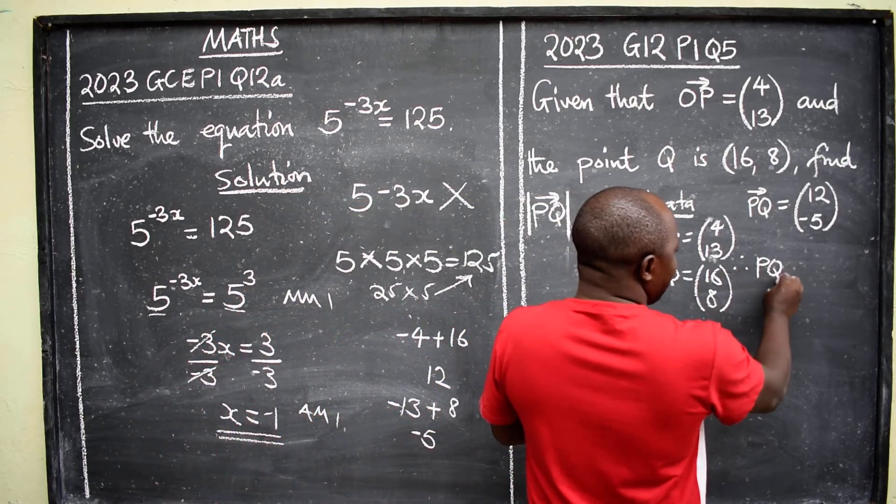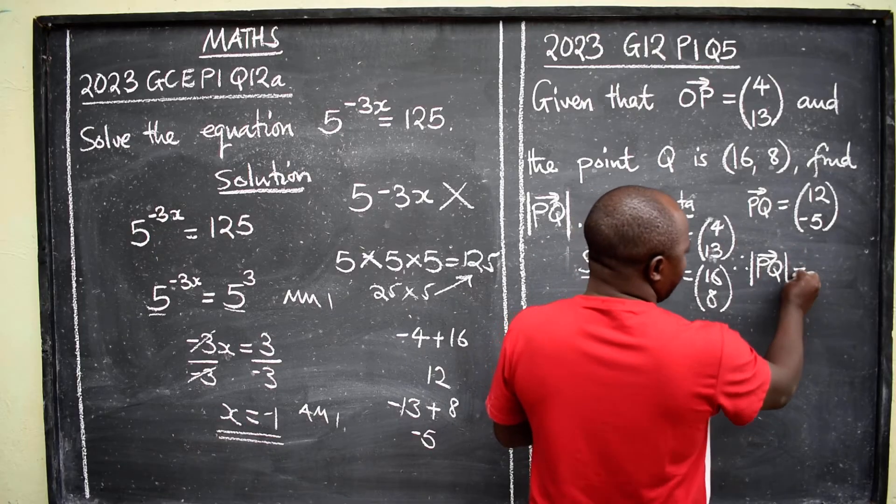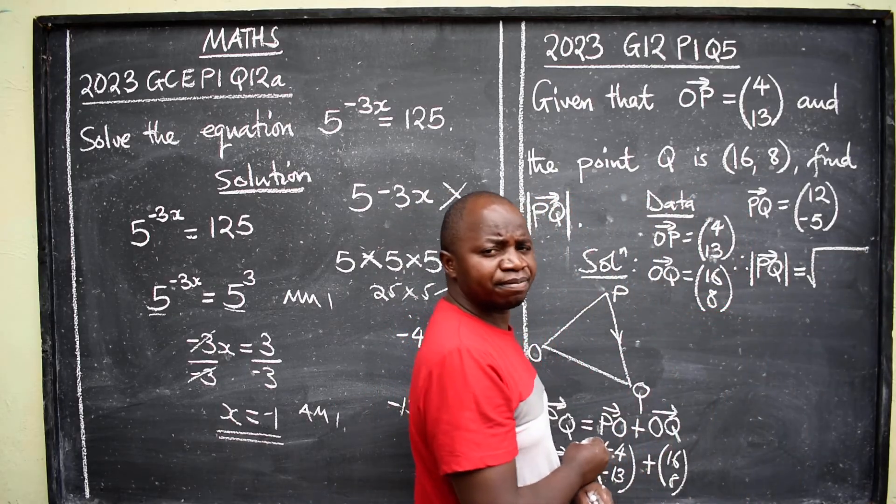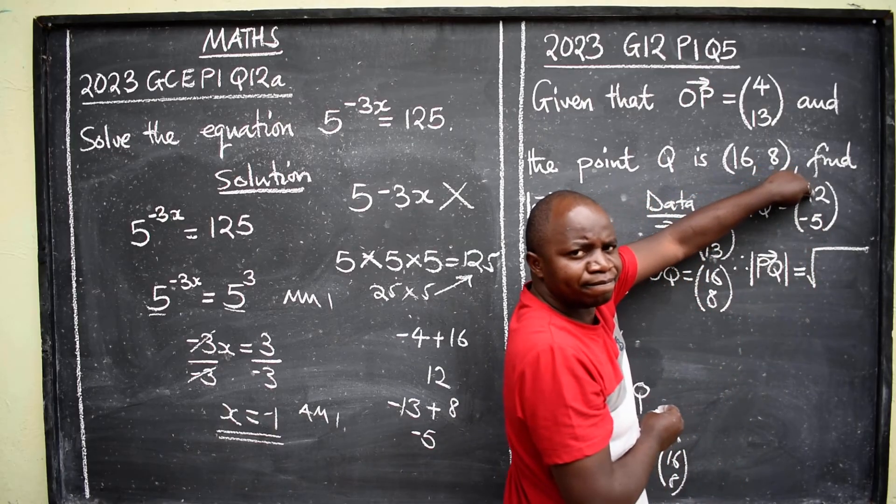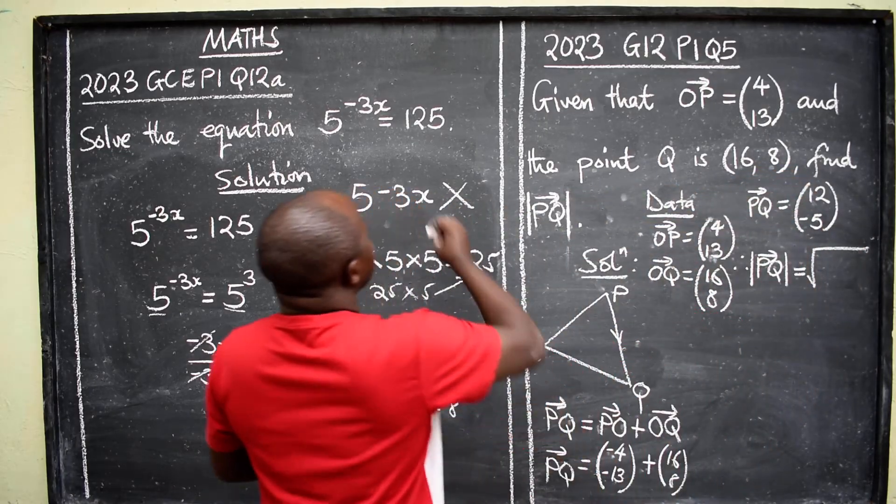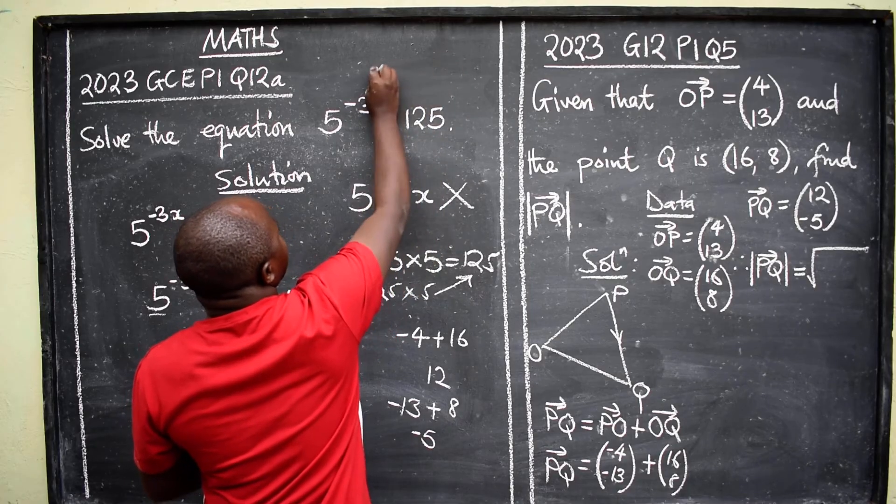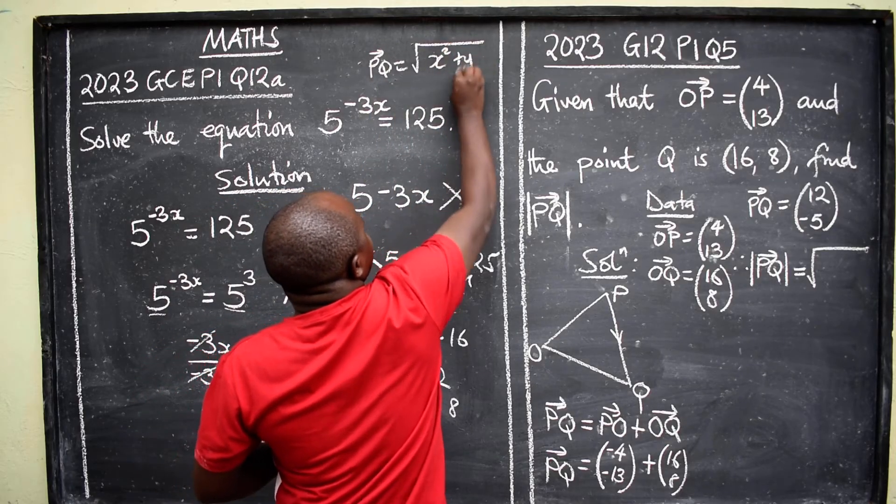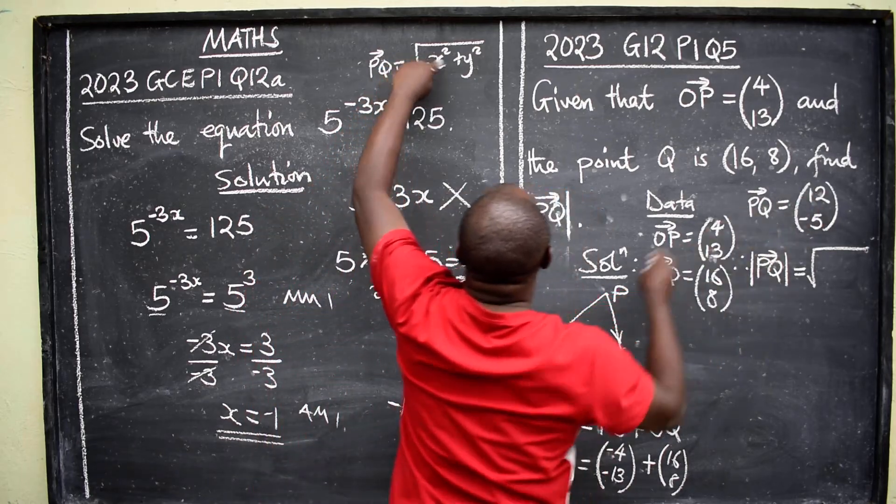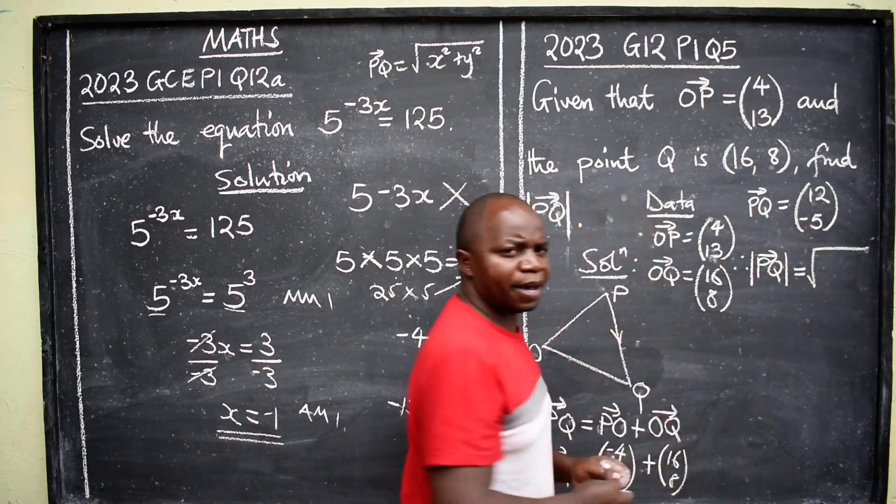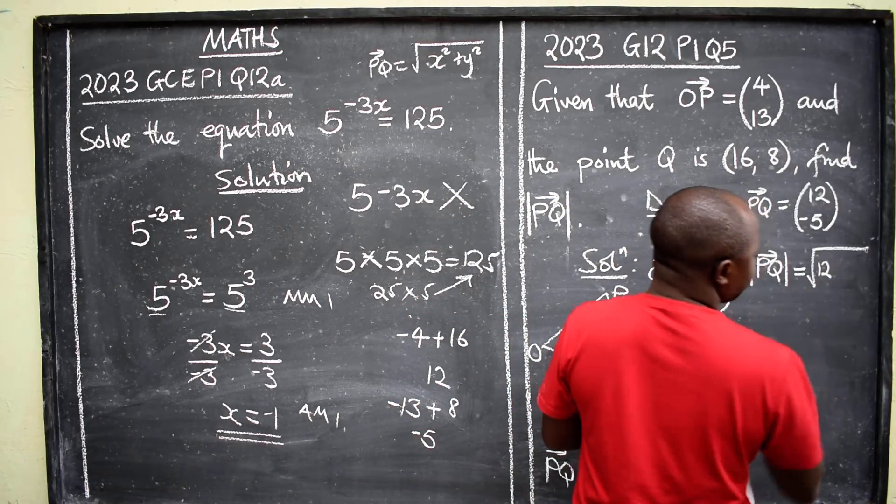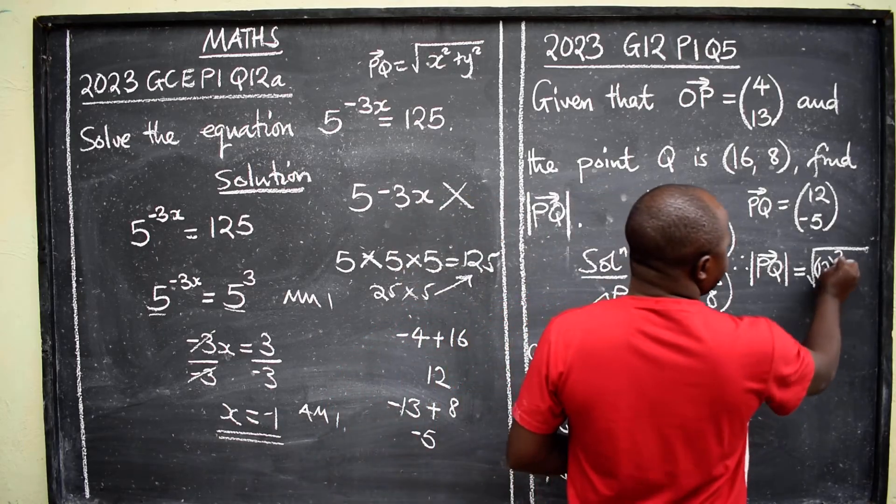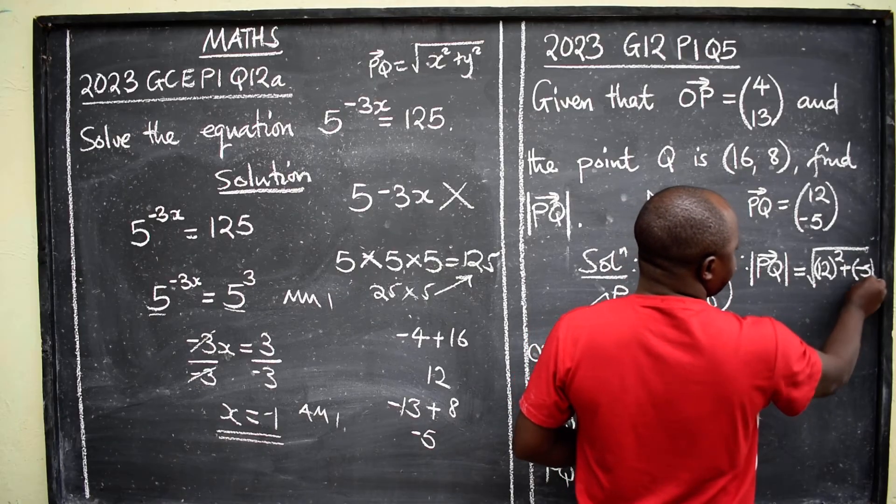The formula basically is, whenever you are finding the magnitude, you should know that for example PQ, it should be like this: x squared plus y squared. So our x is this one, y is this one. So you are going to substitute in there. So when we substitute, we are going to have 12 in brackets squared plus negative 5 squared.